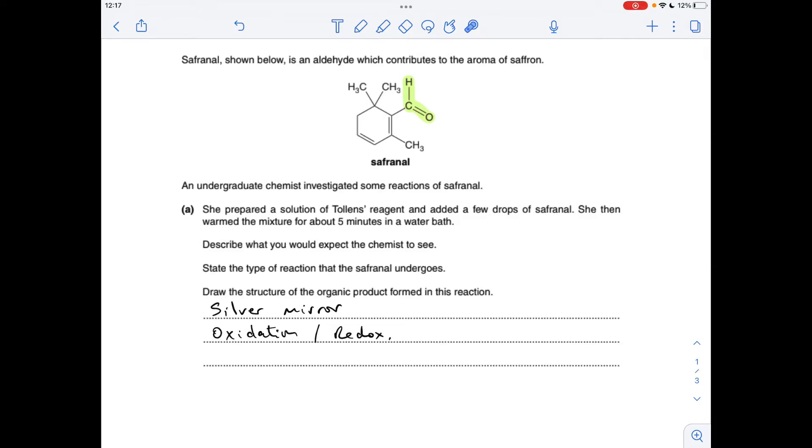Okay so make a start. There's the aldehyde group in safranal. Tollens' reagent is a mild oxidising agent so it will oxidise this group here to a carboxylic acid group. So the observation you would see would be a silver mirror.